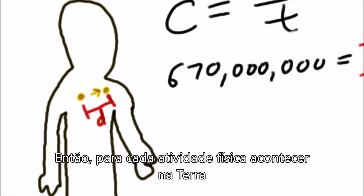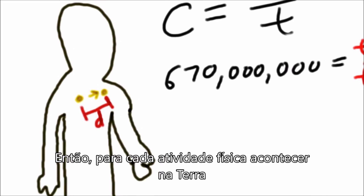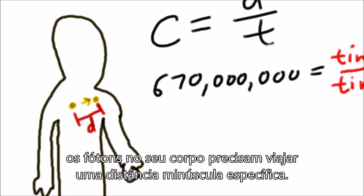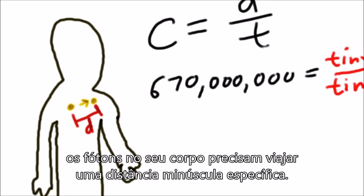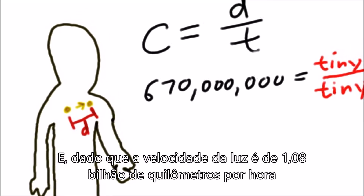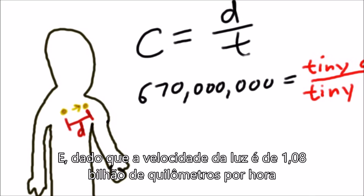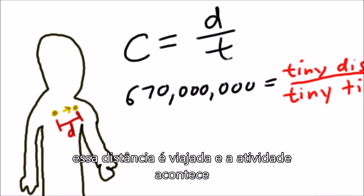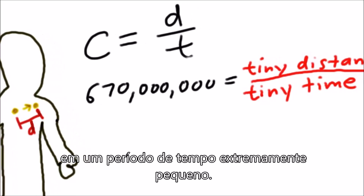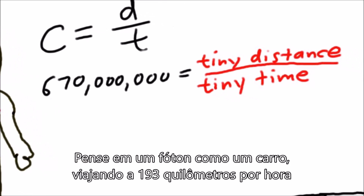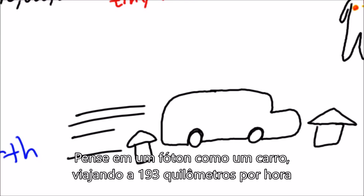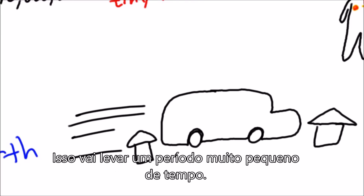So for any bodily activity to occur on earth, the photons in your body need to travel a certain, very tiny distance. Since the speed of light is 670 million miles per hour, this distance is traveled and the activity happens in an extremely short amount of time. Think of a photon like a car traveling at 120 miles per hour just to get next door — it's going to take a very short amount of time.